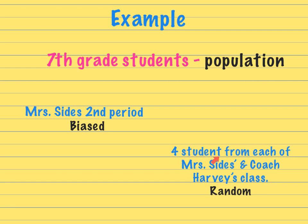However, if I said I was going to select four students from each of Ms. Sides' classes and Coach Harvey's classes, then that would be random and fair because every student in seventh grade now has a chance of being selected, since I'm looking at both teachers' classes and taking four kids from each class.